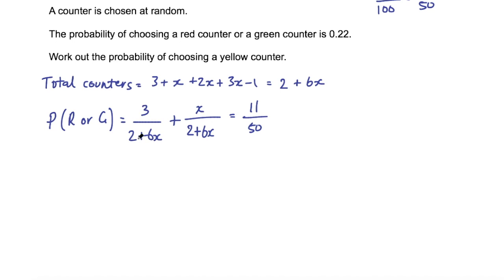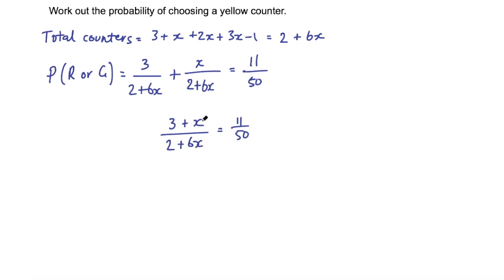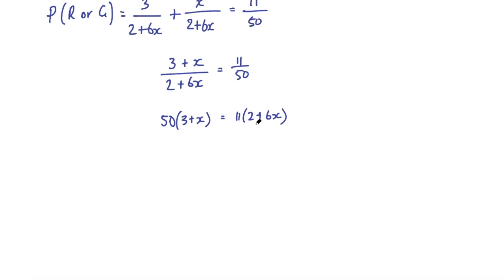Now I have an equation with one unknown. I combine the fractions — same denominator — to get (3 plus x) divided by (2 plus 6x) equals 11 over 50. Cross multiplying gives 50 times (3 plus x) equals 11 times (2 plus 6x). Expanding the brackets: 50 times 3 is 150, 50 times x is 50x on the left; 11 times 2 is 22, and 11 times 6 is 66x on the right.